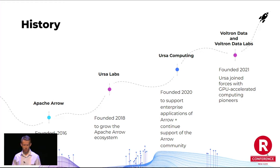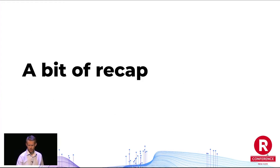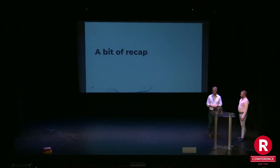The open source mission of Ursa Labs continues on as Voltron Data Labs. We're now over 100 people, and several dozen of those actively work on the Apache Arrow project and the ecosystem around Arrow. I'll hand this over to John to talk about what this all means for an R user and how to make what we've been building more concrete in your day-to-day work as an R developer.